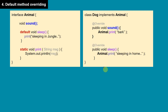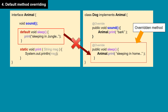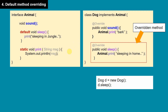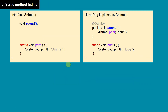Suppose we override the sleep method in the Dog class. In that situation, the sleep method from the Animal interface will not be inherited because Dog has its own implementation. If we create a Dog instance and call sleep, it calls the overridden method. Even with Animal a = new Dog, since sleep is an instance method and the actual instance is Dog, it calls the overridden method. So yes, we can override default methods.